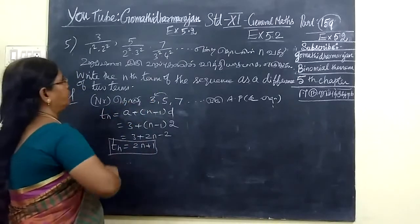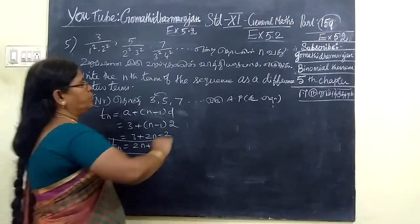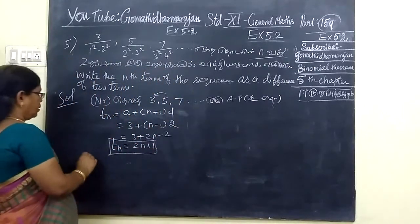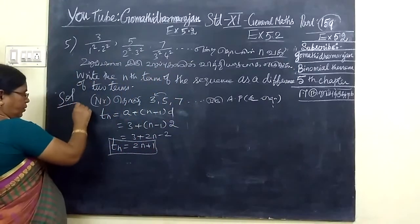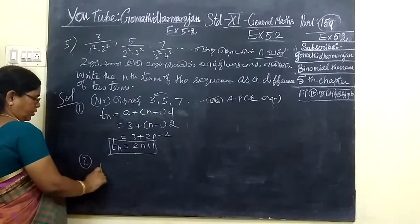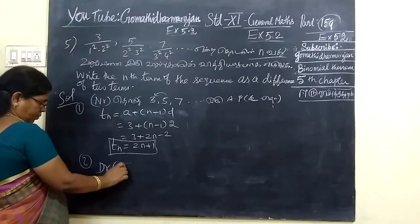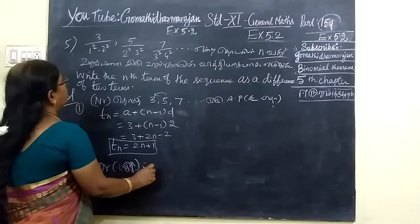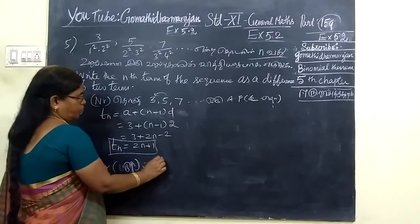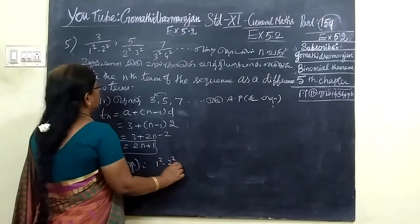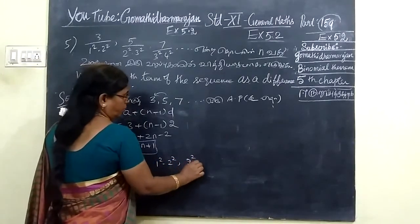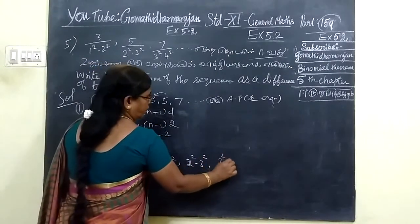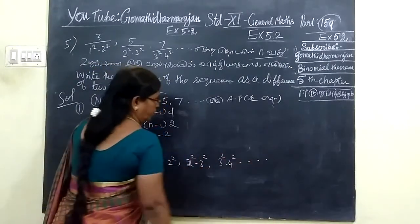So the numerator is the positive term. Now we are going to understand the positive. The second step is the denominator. The denominator is 1 square, 2 square, then 2 square, 3 square, then 3 square, 4 square, etc.